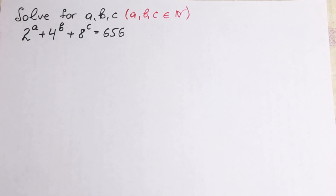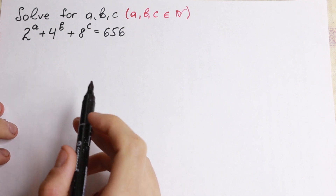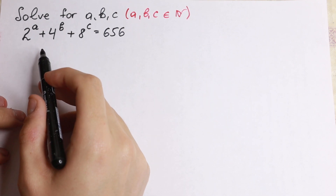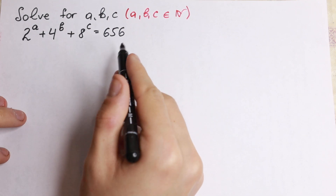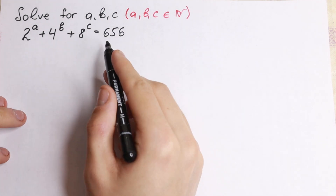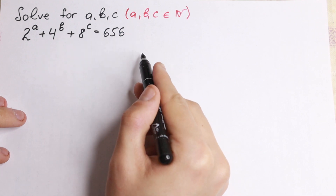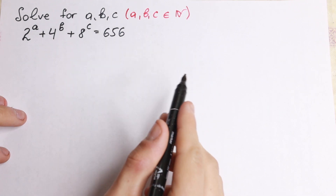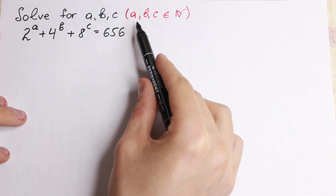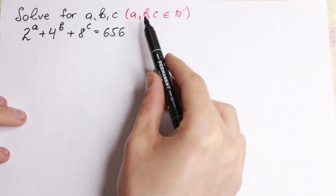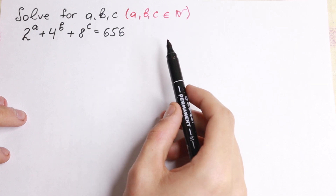Hello everyone! Welcome back to High Mathematics. In this video we are going to solve a really interesting algebra problem. We have 2 to the a plus 4 to the b plus 8 to the c equal to 656. We have three variables a, b, and c, and we need to find natural numbers a, b, and c.